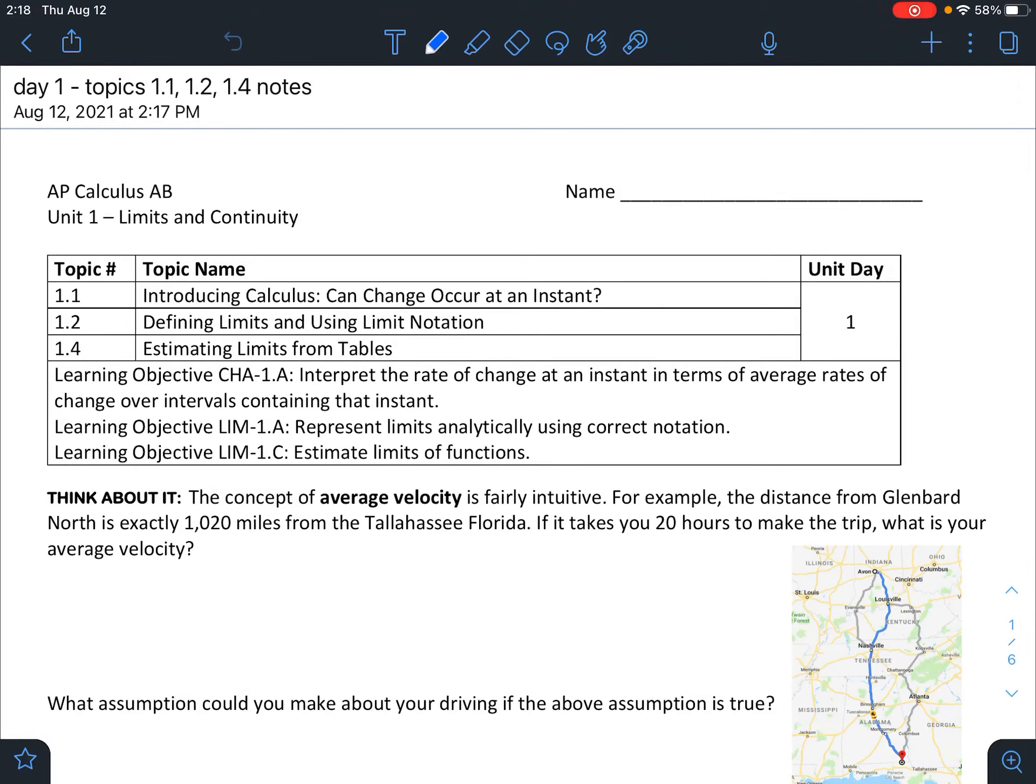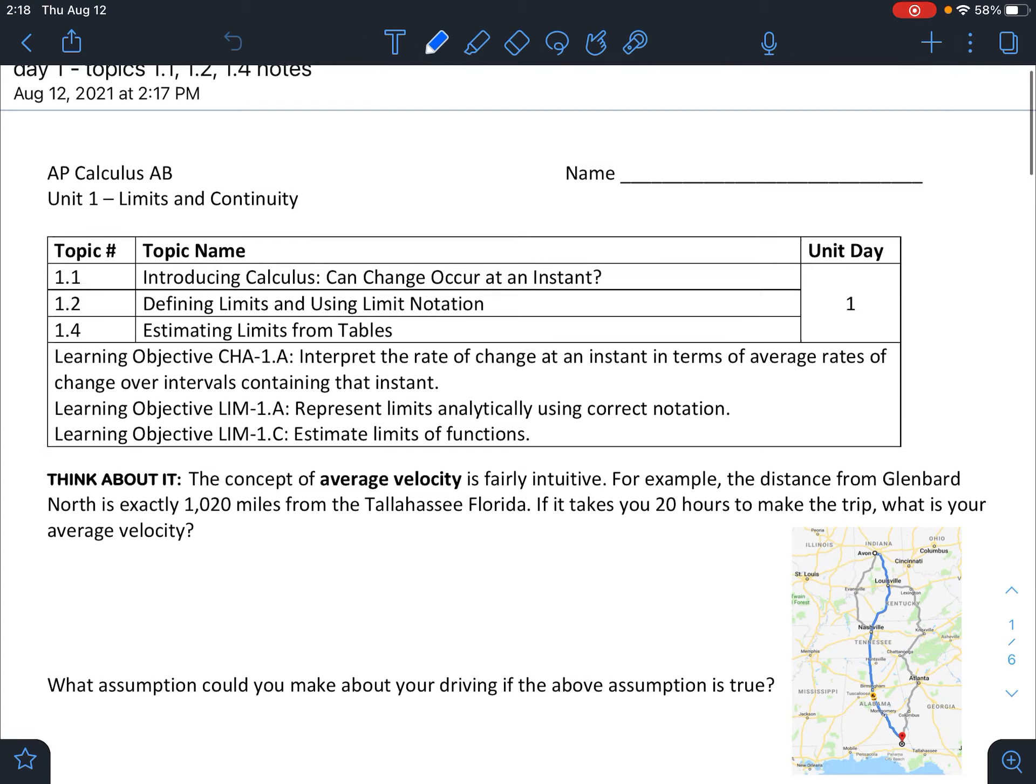Welcome, everybody. This is going to be our first lesson in Calculus AB. Here are some topics we're going to talk about today. We're going to talk about can change occur at an instant, define limits in a little bit and talk about limit notation, and we're also going to talk about how to estimate limits from tables. So let's get started.